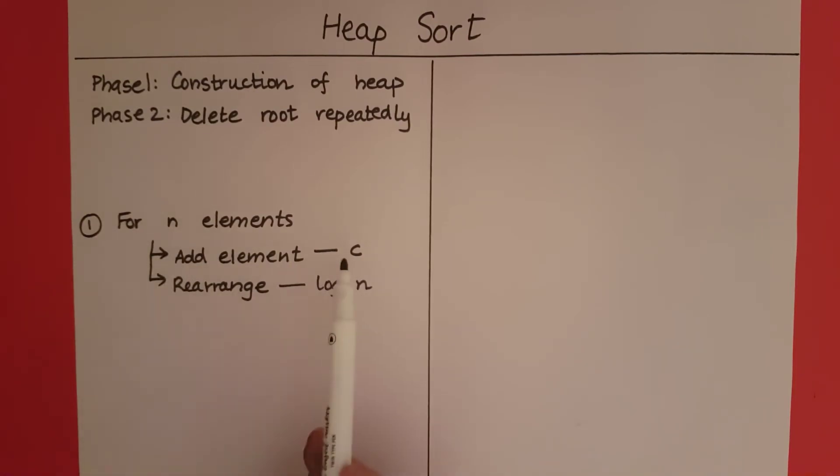So for n elements, I am going to add the elements, which takes time c, and rearrange, which is going to take time log n. So this is going to be a total of how much time? n into c plus n into log n.